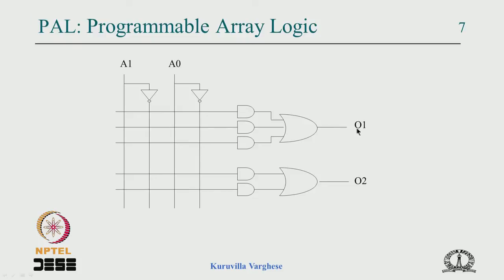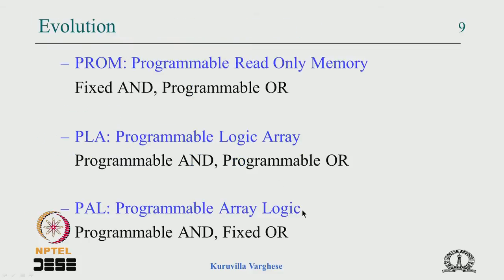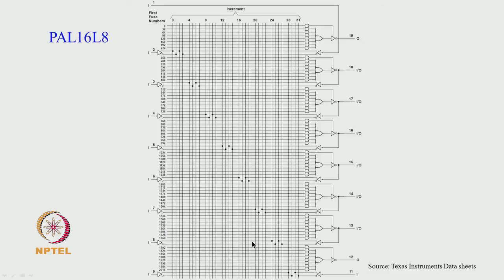With a fixed OR gate, you can implement a Boolean function of up to say 3 product terms; if you only need 2, you disable the third AND gate. So the evolution went: PROM (fixed AND with all 2^N minterms, programmable OR), then PLA (programmable AND and programmable OR — an overkill), then PAL (programmable AND, fixed OR). The first PAL devices came from AMD and Texas Instruments, and we now examine one basic structure.